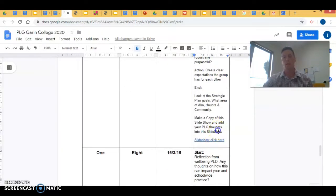The final aspect of our meeting, just as we begin, is to look at the strategic plan goals. The three areas are haora, ako, and community. We're just starting the journey.